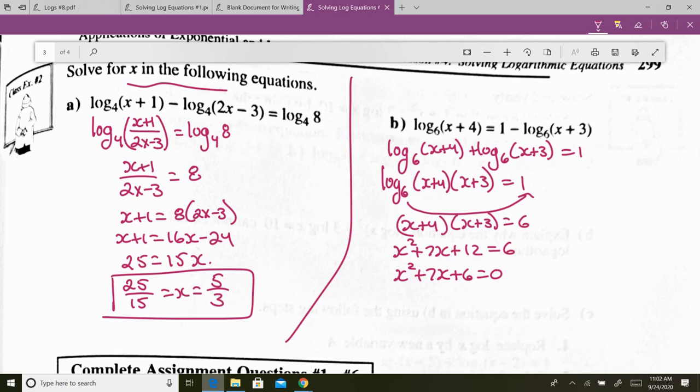Next step, factor it. x plus 6 and x plus 1. What are my answers? negative 6 and negative 1. What do you have to do? Check which one doesn't work. negative 6 doesn't work. Do we understand why negative 6 doesn't work? It's very important. You put negative 6 plus 4, you get negative 2. But negative 1, negative 1 plus 4, that's positive 3, that's fine. negative 1 plus 3 is positive 2, that's fine as well.